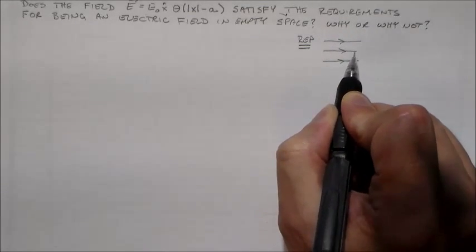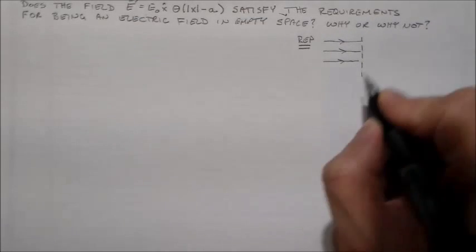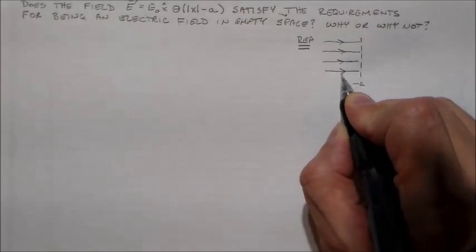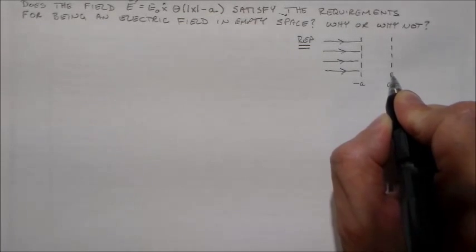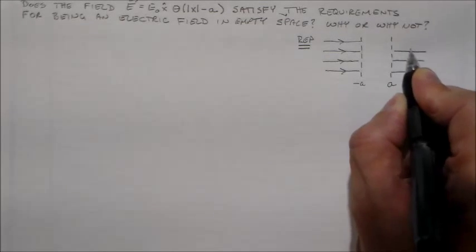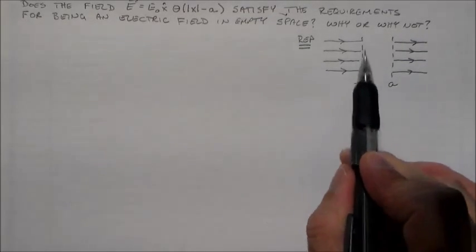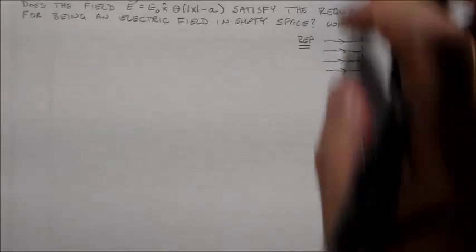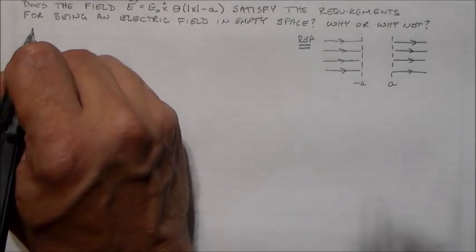But then there's a spot where it sort of disappears at minus a, and then it reappears on this other side. So it's sort of like a shielded spot. So I've shielded off this region from this external electric field. And so the question is, does this entire thing satisfy the relationships in empty space?